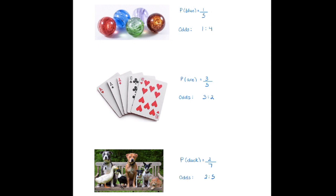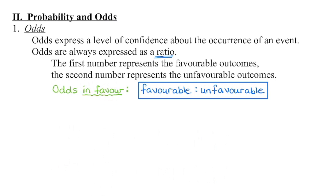We have one favorable outcome and four unfavorable outcomes. There is one blue marble that we want and four other marbles that we don't want. There are three aces that we want and two other cards that we don't want. There are two ducks that we want and five other animals that we don't want. If we're dealing with odds in favor, that first number represents favorable outcomes — what we want. The second number represents unfavorable outcomes — what we don't want. It's written as a ratio and, similar to probability, it tells us how confident we can be that a particular event is going to occur.